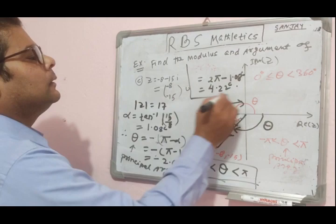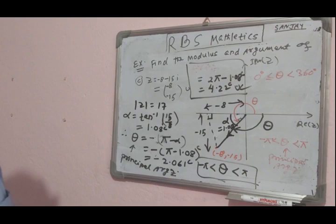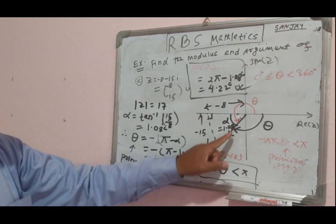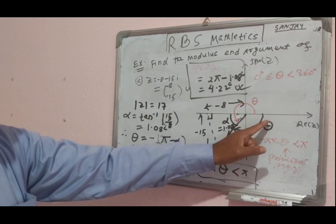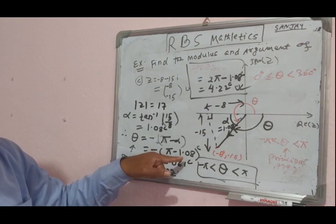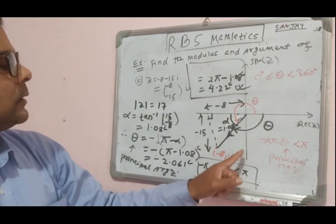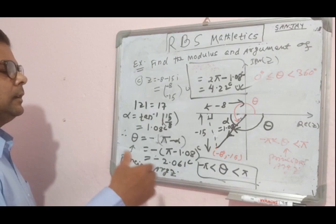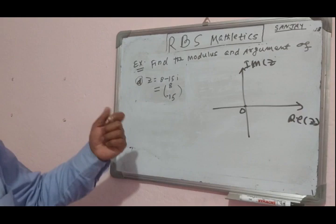For the general argument (range 0 to 2π), arg(z) = 2π - 1.08 ≈ 4.22 radians. Both -2.061 (principal argument) and 4.22 (general argument) are correct, as they describe the same position. However, Cambridge Paper 3 typically uses the principal argument range, so you should use -π to +π unless stated otherwise.